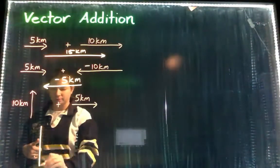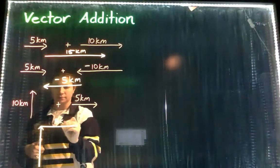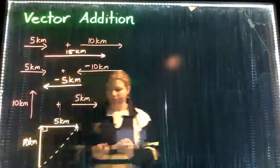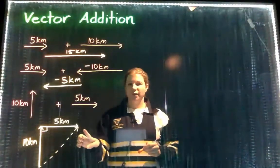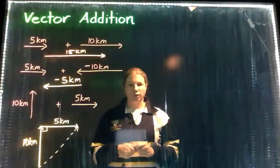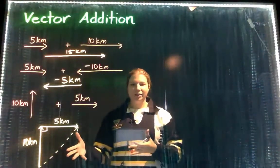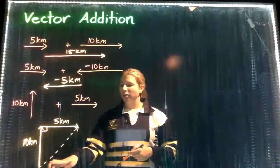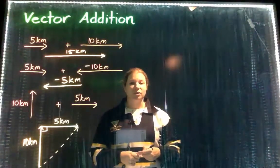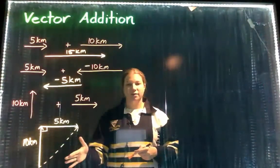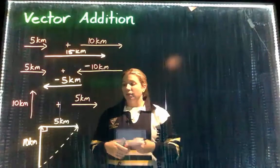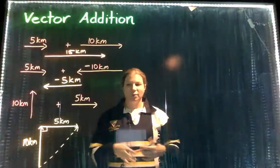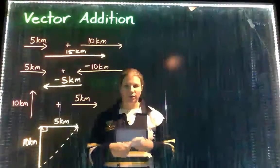The resultant vector is shown here by our dotted line. This right angle triangle hopefully will take you back to maybe year 9 maths when we learned about Pythagoras. So we can actually find the magnitude and direction of this vector. Pythagoras theorem states that the square of any of the two sides that's not the hypotenuse will equal the square of the hypotenuse.